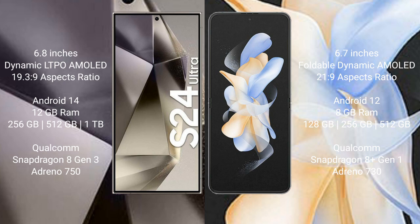The Samsung Galaxy S24 Ultra comes with 12GB RAM and 256GB, 512GB, or 1TB internal storage options, powered by a Qualcomm Snapdragon 8 Gen 3 processor and Adreno 750 GPU.